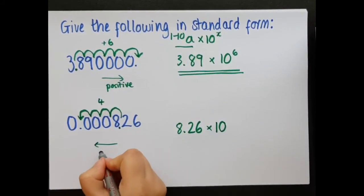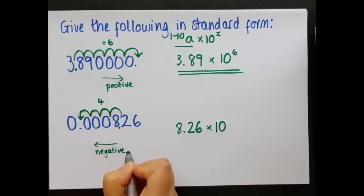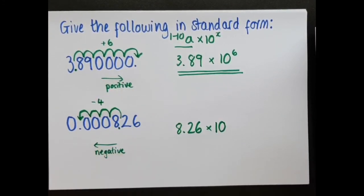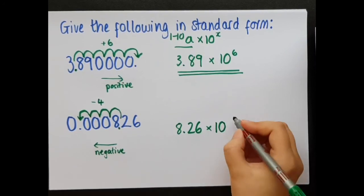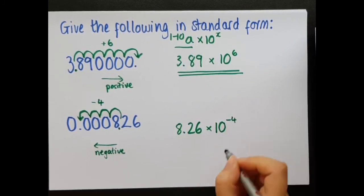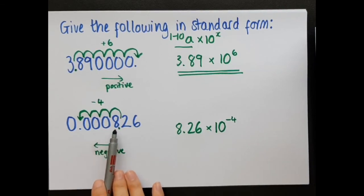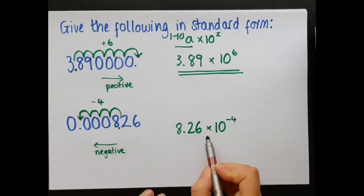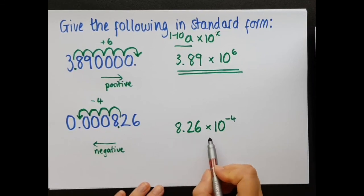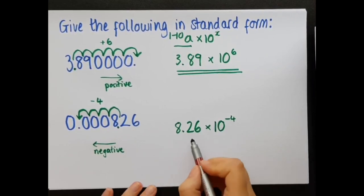So, it's a negative 4. Therefore, my index on the 10 is negative 4. So, 0.000826 becomes 8.26 times 10 to the minus 4.